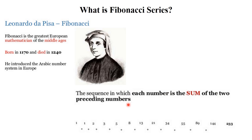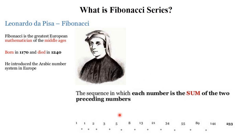For example: 1 plus 1 equals 2, then 2 plus 1 equals 3, 3 plus 2 equals 5, 5 plus 3 equals 8 — each number is the sum of the two preceding numbers. This series is called the Fibonacci series.